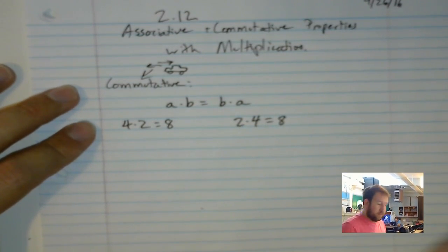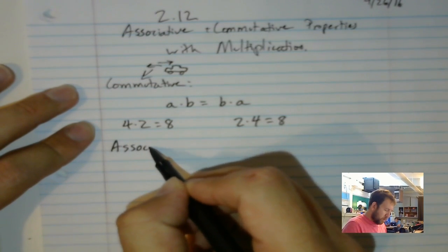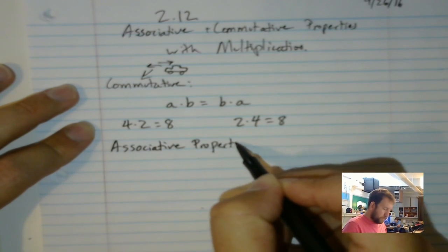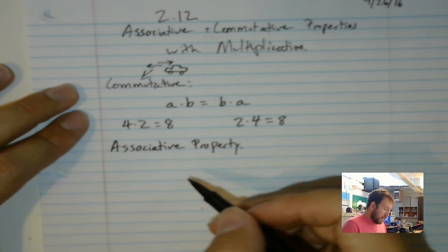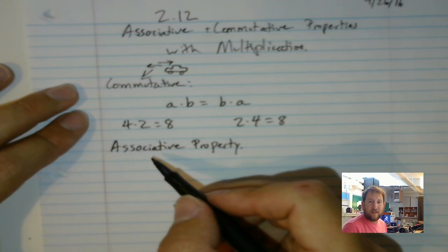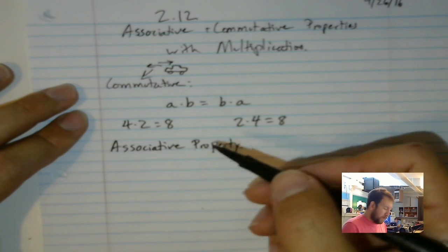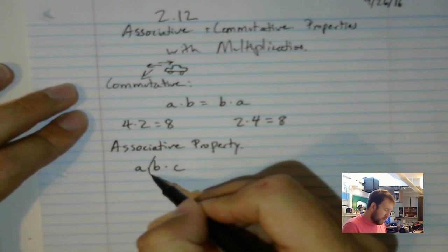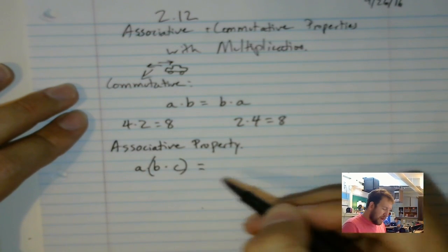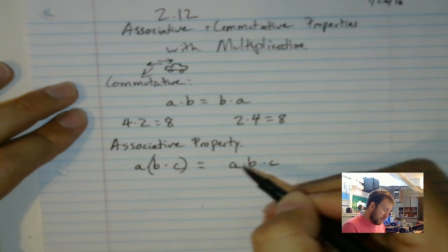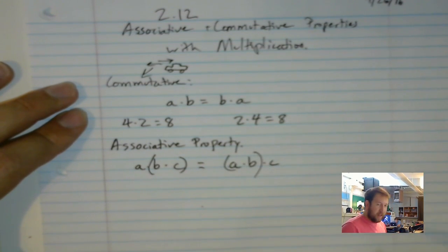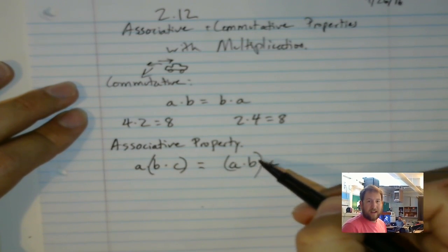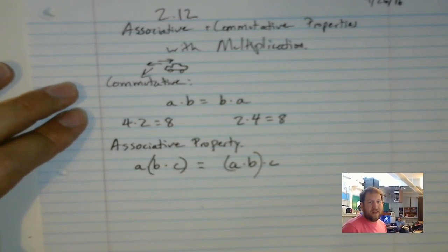And again, our associative property of multiplication is pretty similar. But that's, remember, when you have associates or friends and they get mad at each other and then they go hang out with other people? We're going to have our A times B times C. But in this case, our B and our C are going to be a quantity. And that is equal to A times B times C, with A and B as a quantity. So, in this one, we have to multiply B times C first. In this one, we have to multiply A times B first. But it doesn't matter. In the end, it turns out the same.